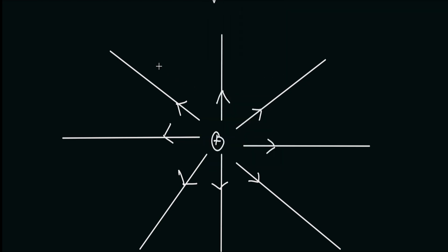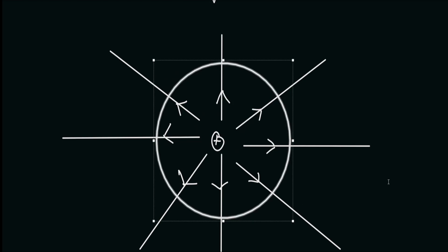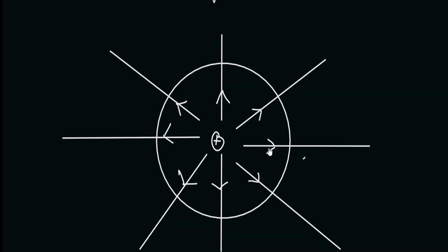If we enclose this positive charge in a sphere of some radius — it is supposed to be a sphere, but since I'm drawing this on a two-dimensional screen, I'm representing it by a circle. You can imagine it like a top view of the sphere. We see that the electric field lines are penetrating through the surface of the sphere; that is, there is some flux of the electric field through the sphere.